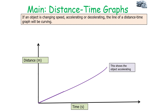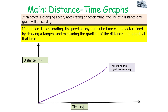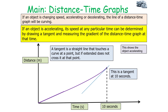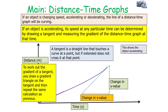If an object has a changing speed — it's accelerating or decelerating — the line of a distance-time graph will be curving. The speed at a particular time can be determined by drawing a tangent and measuring the gradient at that time. A tangent is a straight line that touches a curve at a point but, if extended, does not cross it at that point. For example, this would be the tangent at 10 seconds. To find the gradient of a tangent, draw a gradient triangle on it and repeat the same calculation.